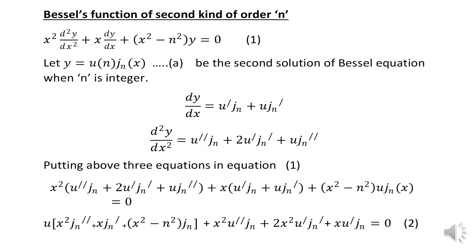Suppose we have a differential equation of this type: x² d²y/dx² + x·dy/dx + (x² − n²)y = 0. Let y be the solution, and let it be u·Jn(x), meaning u also depends upon x and the order is n — basically any integer.